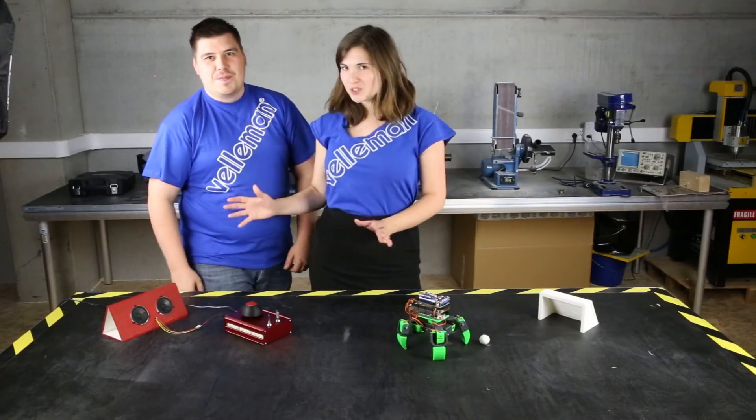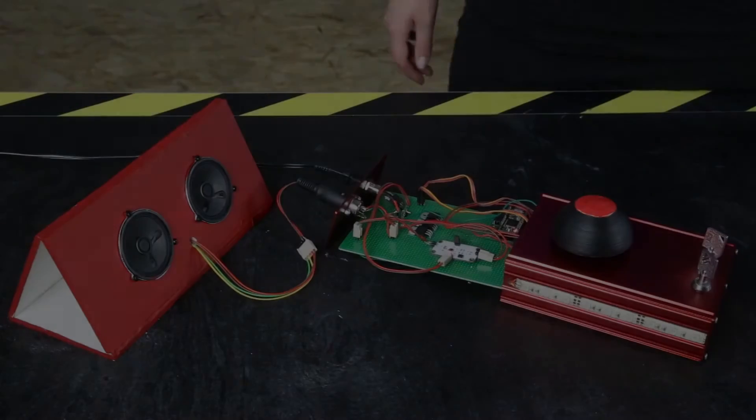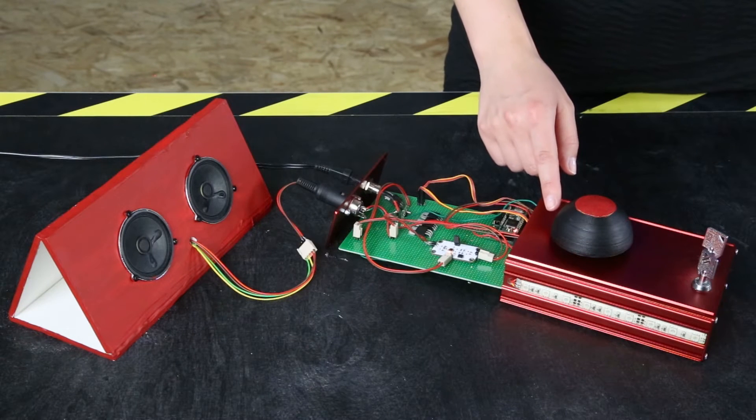If you want to make this awesome gold button at home, here's what you need. First you need a cool 3D printed button, which you can print with our Vertex 3D printer.